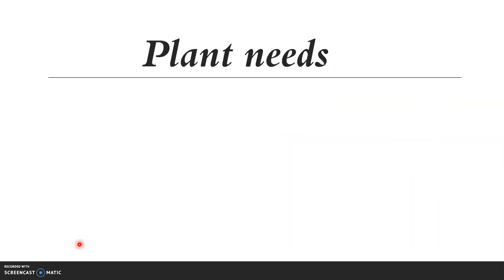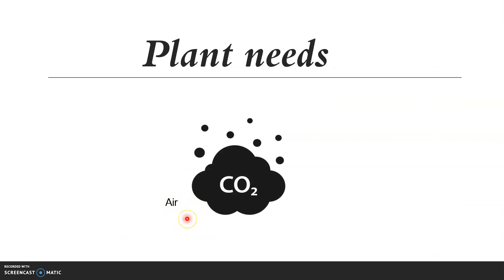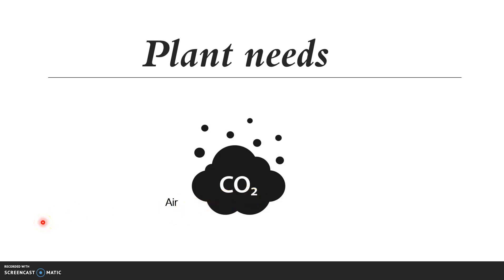Plants also need air. They need carbon dioxide, which they can find in the air. Plants get this gas through their leaves, and the leaves use this gas to make their own food. So those are the plant needs: sunlight, water, carbon dioxide, space, and nutrients. Thank you so much for listening, and see you later!